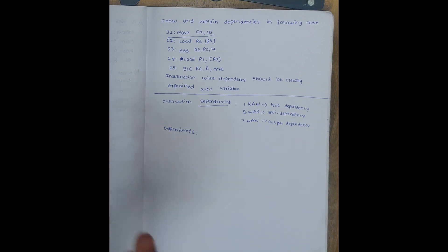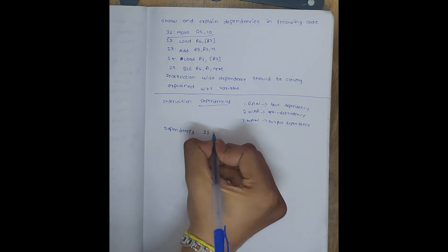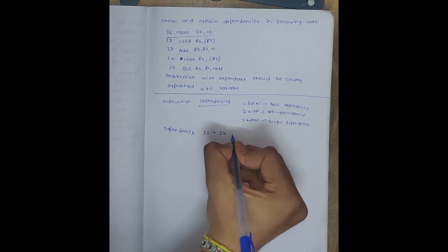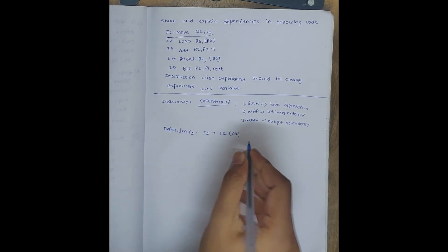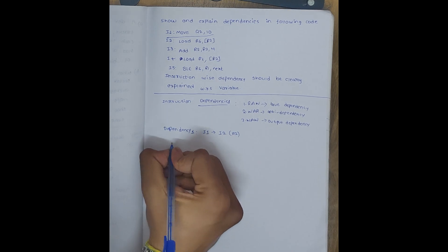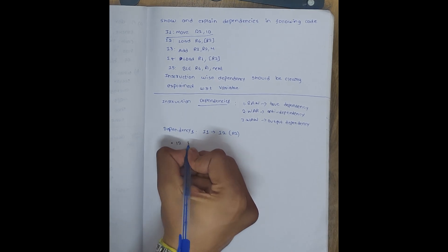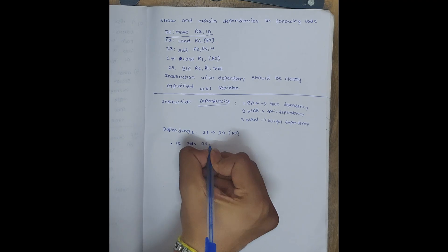There will be one dependency where one instruction is dependent on another instruction. So I will be writing I1-I2 dependency. It is based on R2. First of all, I1 sets R2 equal to 10.